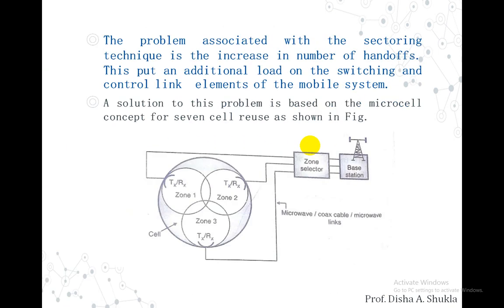The problem associated with the sectoring technique is the increase in the number of handoffs, which puts additional load on the switching and controlling elements of the mobile system. The solution to this is the microcell. As you can see, a particular cell is divided into three different zones.